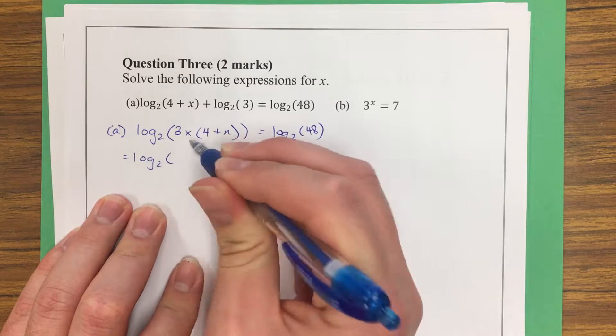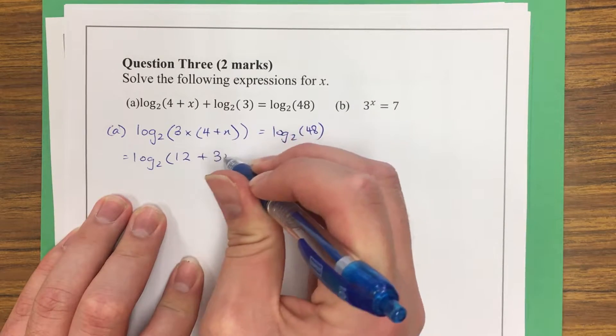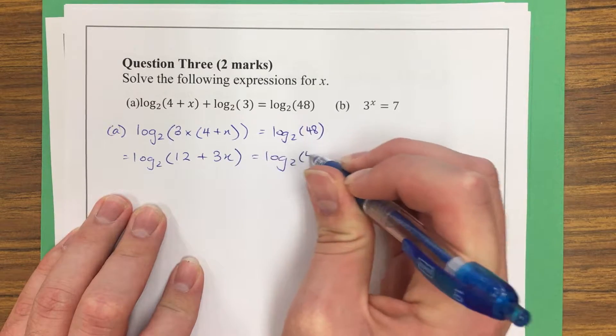This would then become 3 times 4 is 12, 3 times x is 3x, equals log₂(48).